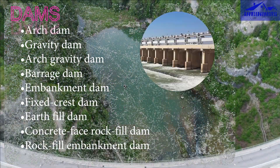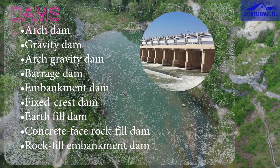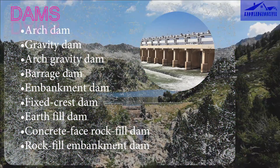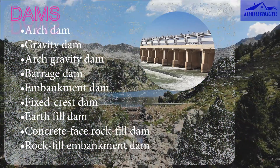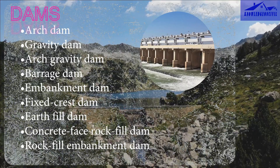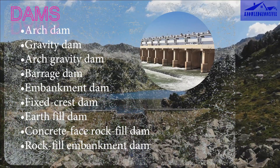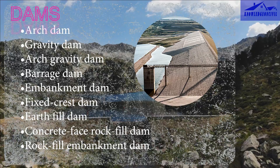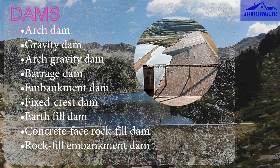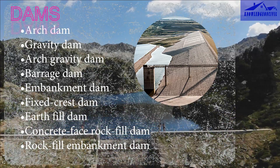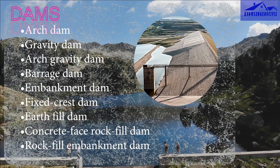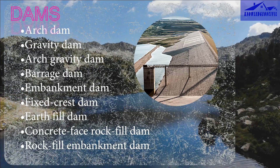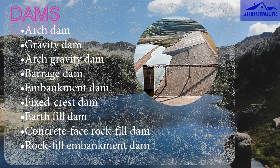Barrage dams are low-height structures built across rivers to control water flow and create reservoirs. They are often used for irrigation and water supply. Embankment dams are constructed using natural materials like soil, rock, or sand. They are built in layers, with each layer compacted to prevent water seepage.